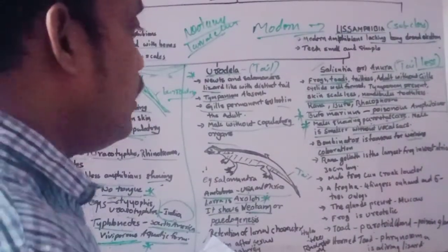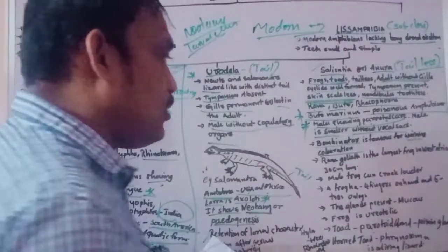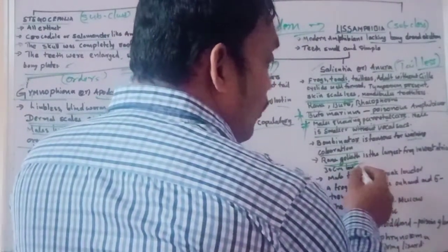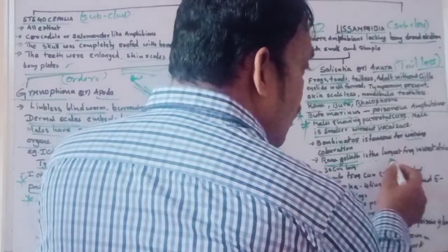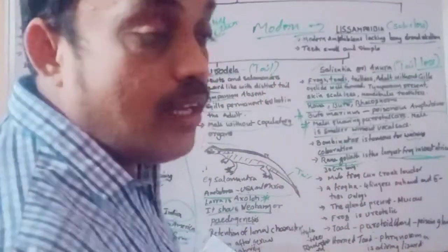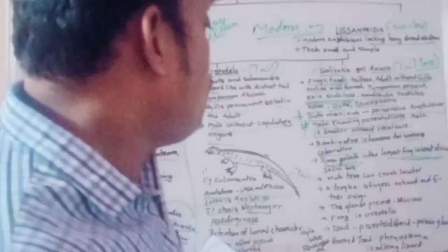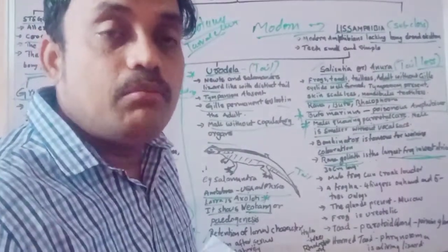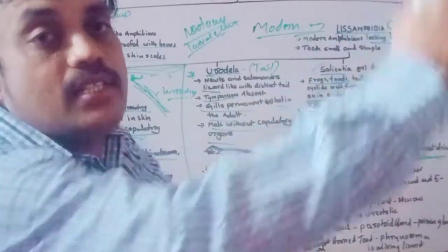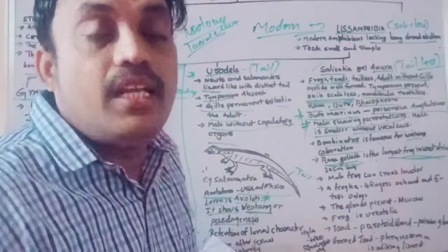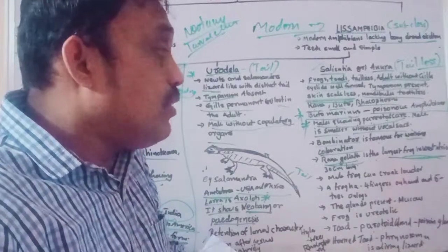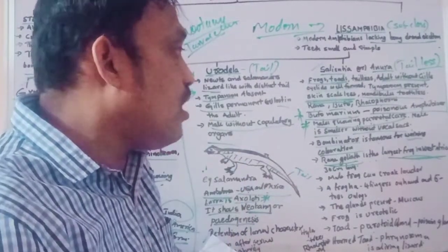Here are the common names and scientific names, which are very important for the exam. For Gymnophiona: Uraeotyphlus — common name is Blindworm. Ichthyophis — common name is Caecilian. For Urodela: Ambystoma — common name is Tiger Salamander.